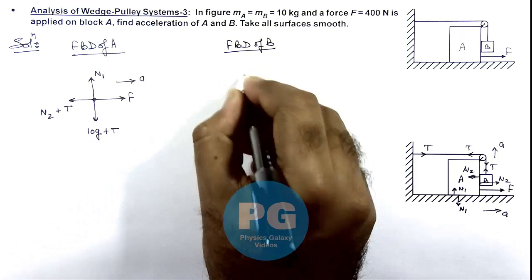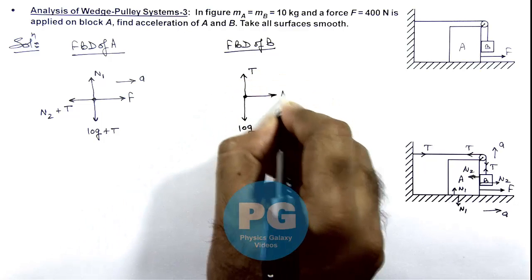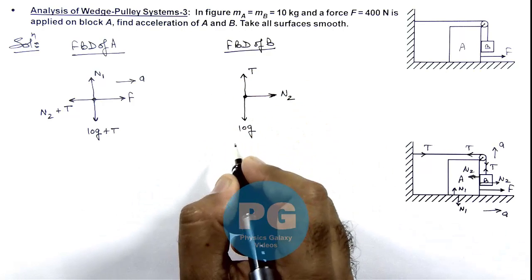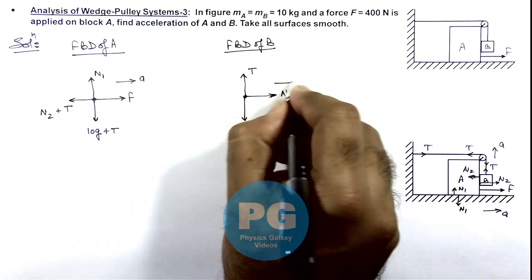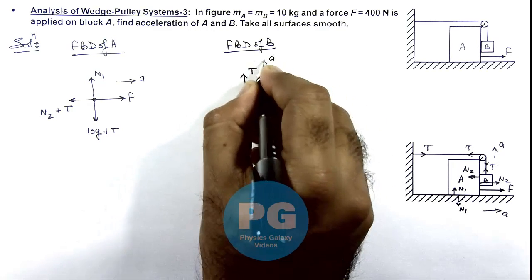Tension will be acting in upward direction and toward right it will be experiencing the normal reaction N2. And this is moving toward right with acceleration a and as well as in upward direction with acceleration a.